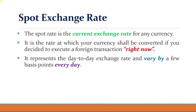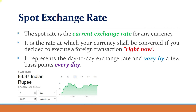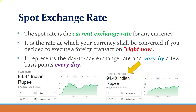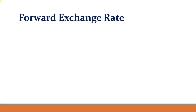For example, the spot exchange rate between the euro and Indian rupees is rupees 83.37, meaning for every one euro we have to pay rupees 83.37. Likewise, the exchange rate between the UK pound and Indian rupees is 94.48, meaning to buy one UK pound we have to pay rupees 94.48. So the spot exchange rate is simply the current rate prevailing in the market.